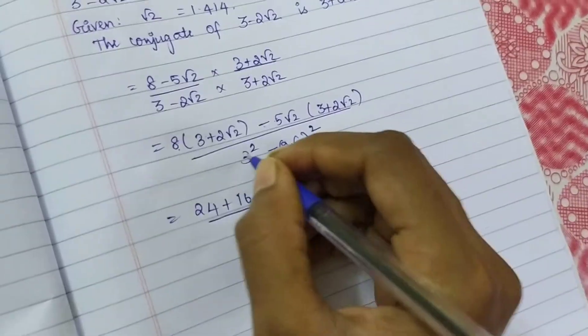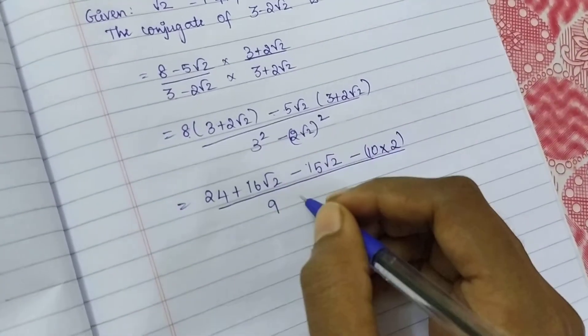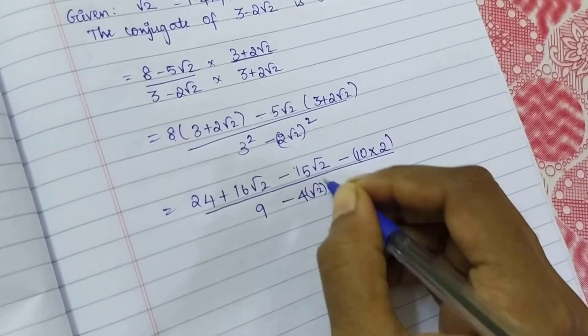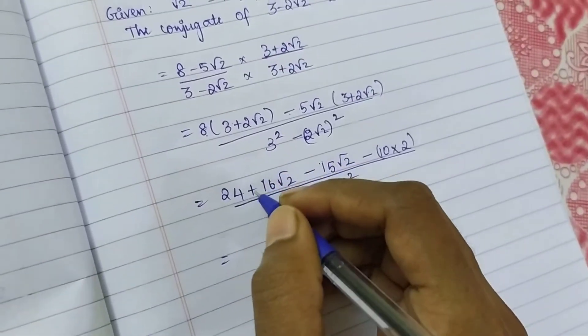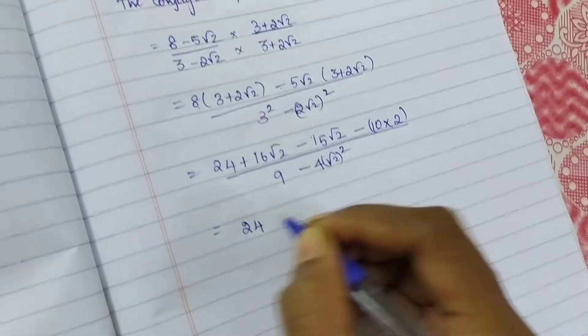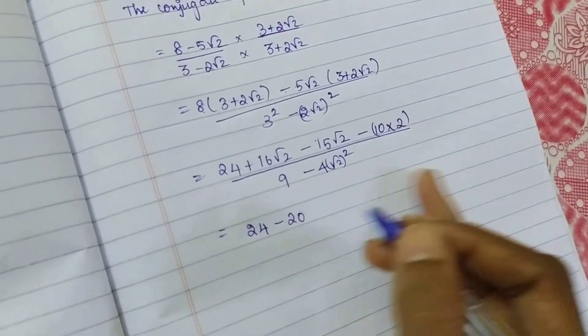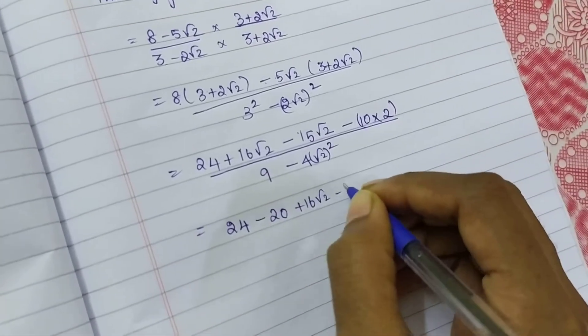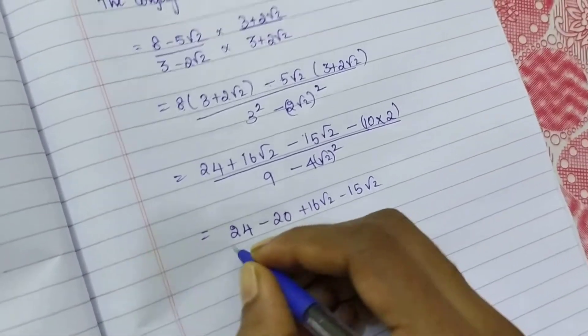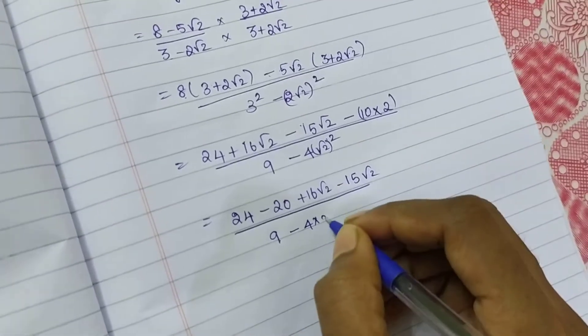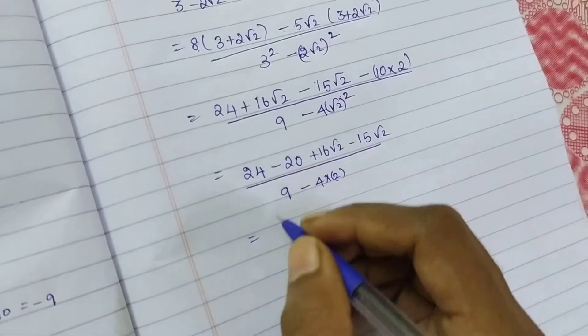So by, in this place, 3 squared is 9 minus 2 squared is 4 root 2 the whole square. So I am having 24 minus 20. I am separating. So, plus 16 root 2 minus 15 root 2 by 9 minus 4 into root 2 into root 2.